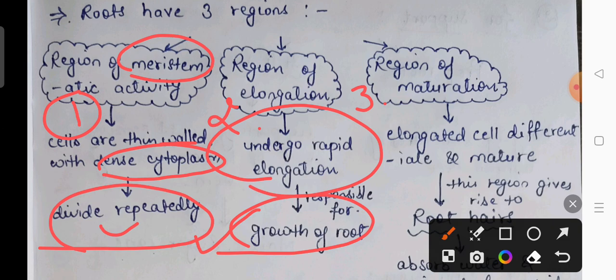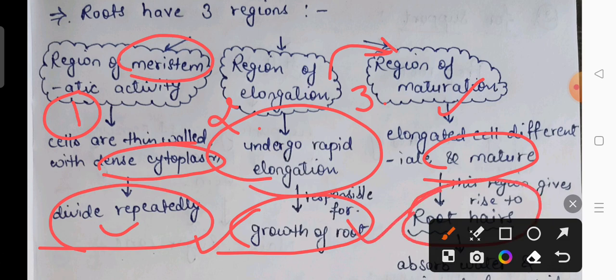The third region is the region of maturation. After the region of elongation, the area above it is called the maturation region. Meristematic cells form new cells, which are later made permanent through the process of differentiation — where cells are given a particular shape, size, and function. In the region of maturation, cells mature and begin performing their specific functions. Root hairs are also present near this region, which increase the surface area for water absorption.